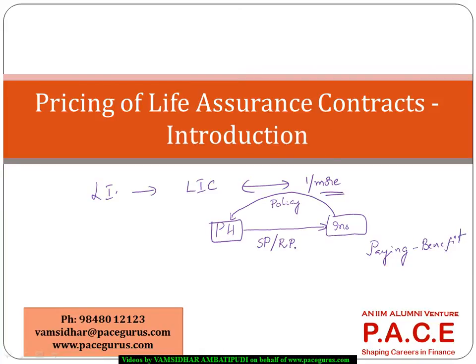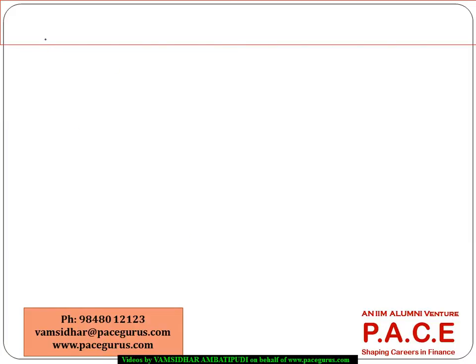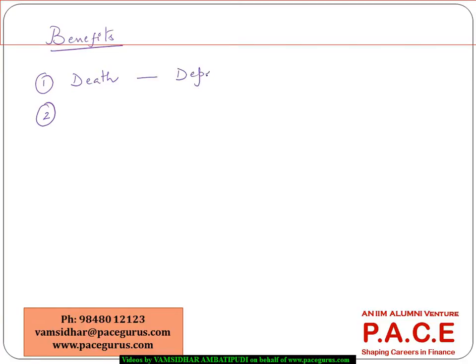How do we typically compute the benefit? The typical benefits we see in any life insurance policy fall under two categories. First, the death-related benefit — the policyholder dies and the benefit needs to be paid to the dependents or beneficiary of that particular policy. Second, on survival — there are a few types of benefits which are paid on survival for a particular term.